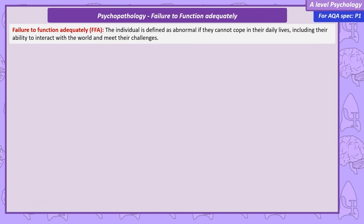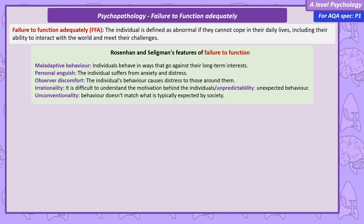Rosenhan and Seligman have outlined several features of failure to function. These include behaving in ways that go against their long-term interests. This could include self-harm or unhealthy patterns of eating, or interacting with others in ways that damage relationships. For example, if you work in a shop, it might be in your best interest to be nice to customers — your long-term best interests, like keeping your job, are best served by not being hostile, sarcastic or aggressive towards customers.